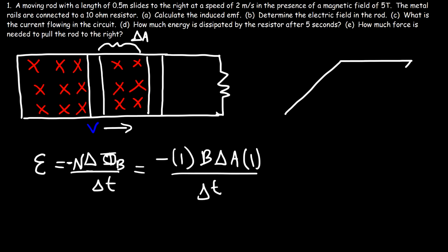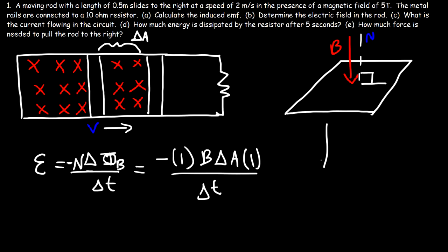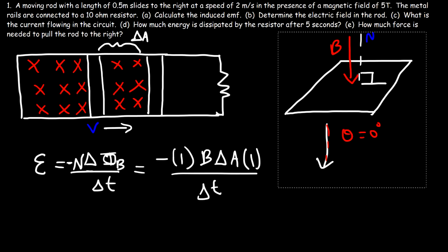Let's say this is the face of the coil, and this is the normal line, which is perpendicular to the face of the coil. The magnetic field is going straight into the page, and so it's parallel to the normal line. The angle between the normal line and the magnetic field is zero degrees, and cosine of zero is 1, so we don't need the cosine term right now.